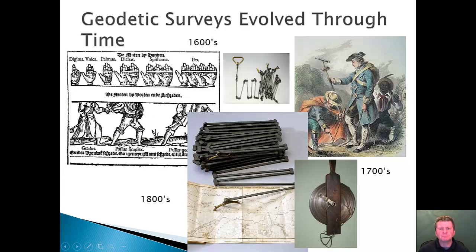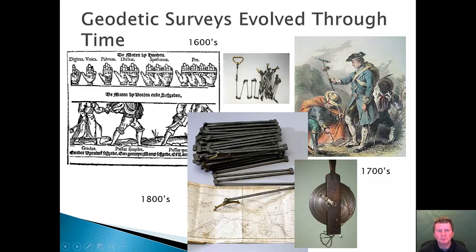Over time we had rods and chains — you may have heard of something along that idea. Here you have a series of devices for measuring from one place to another. We went from the 1600s where it was really related to your hand or a pace, then to the 1700s where it was a metal tape, and the 1800s where they became rods and chains.